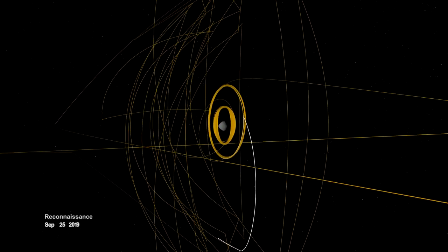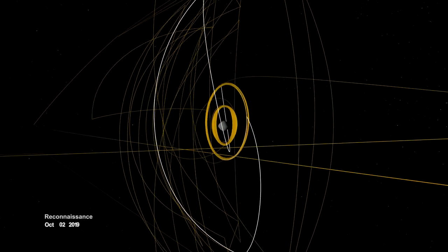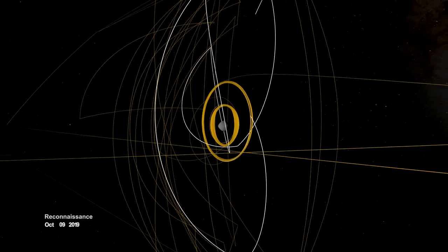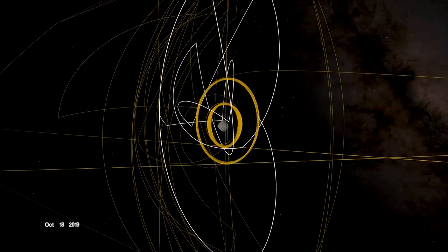In September, it began reconnaissance on four candidate sample collection sites, potential locations on Bennu to touch down and collect a sample later in the mission.